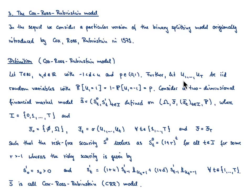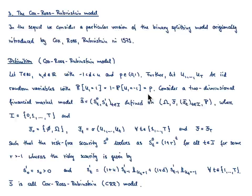Moreover, I would like to fix the parameter little P in the open interval (0, 1). I consider a sequence of random variables U1 up to U_T which have the property that the probability that U1 takes the value 1 is P, whereas the event that U1 takes the value minus 1 has probability 1 minus P. Meaning these random variables U1 up to U_T are essentially Bernoulli random variables.